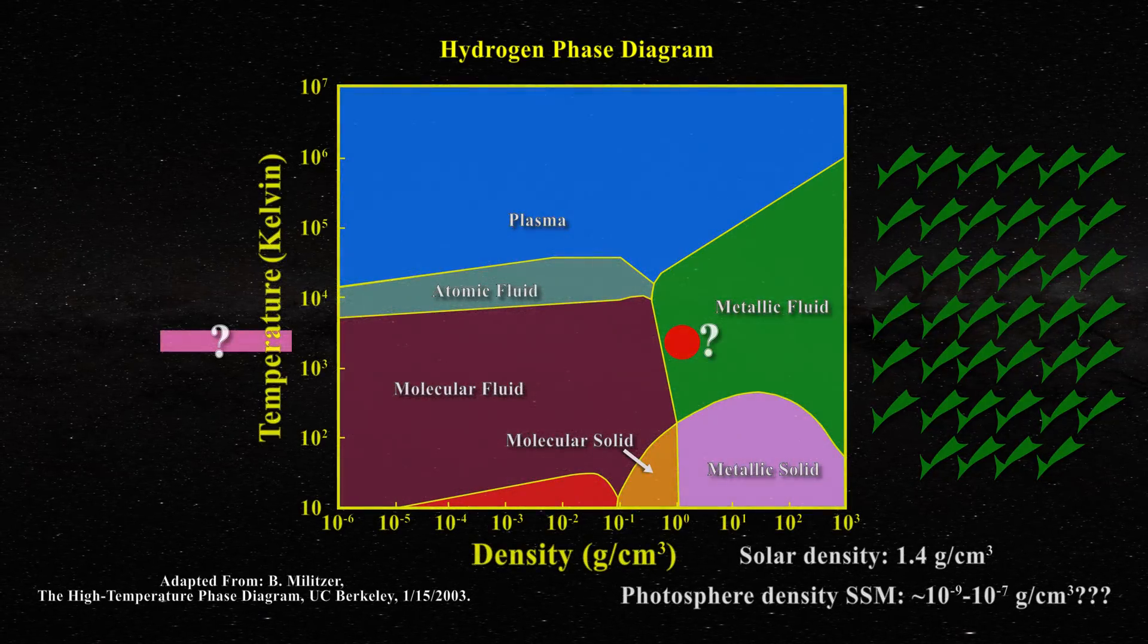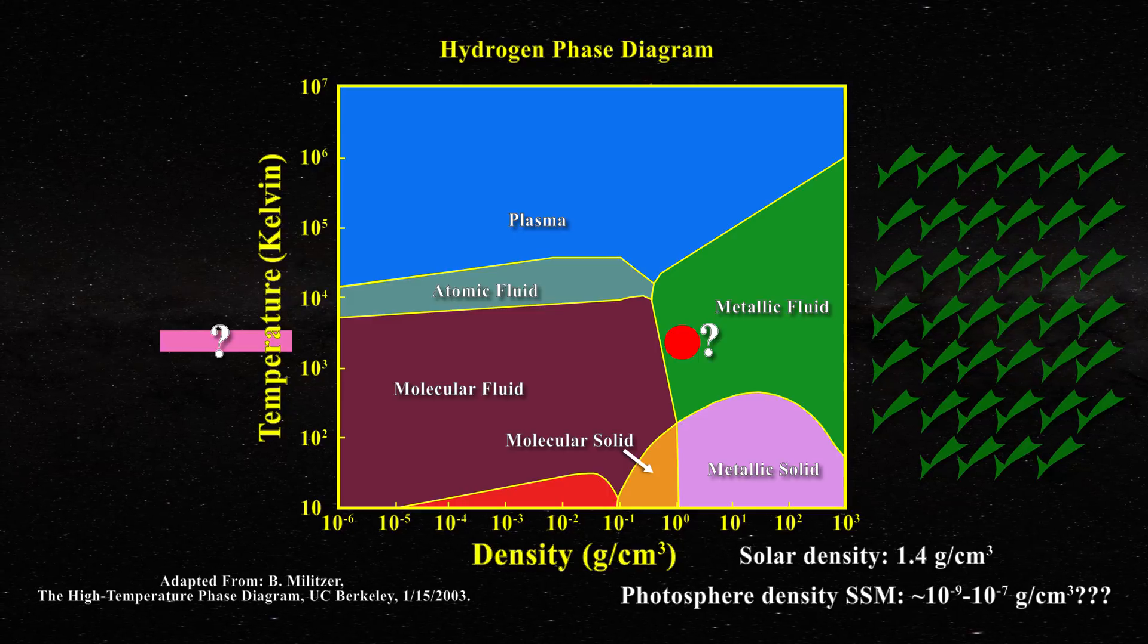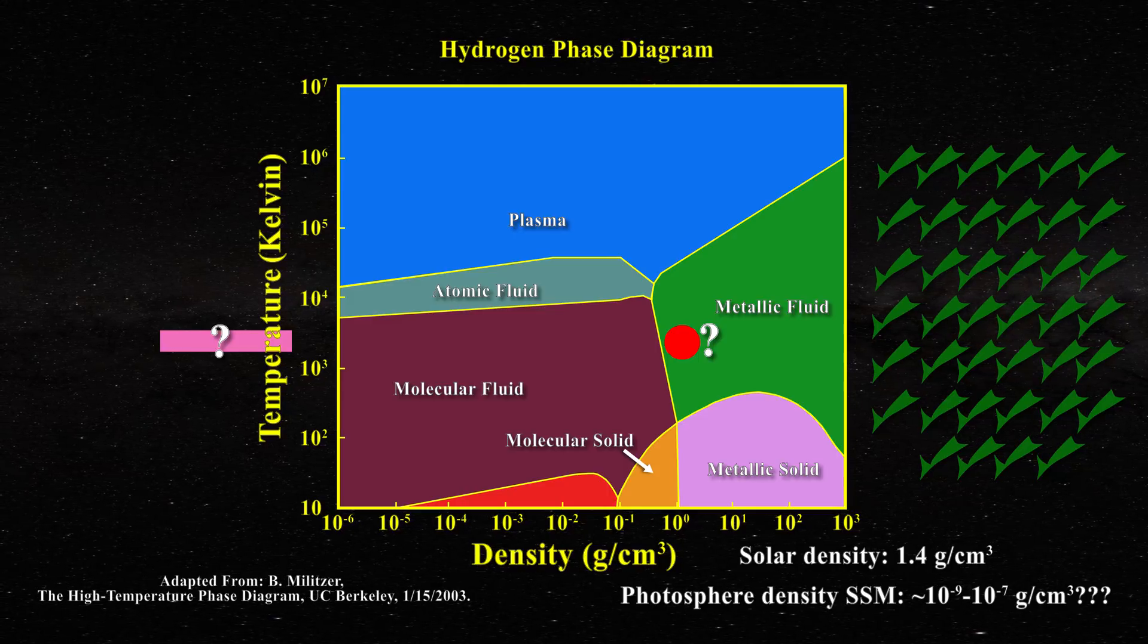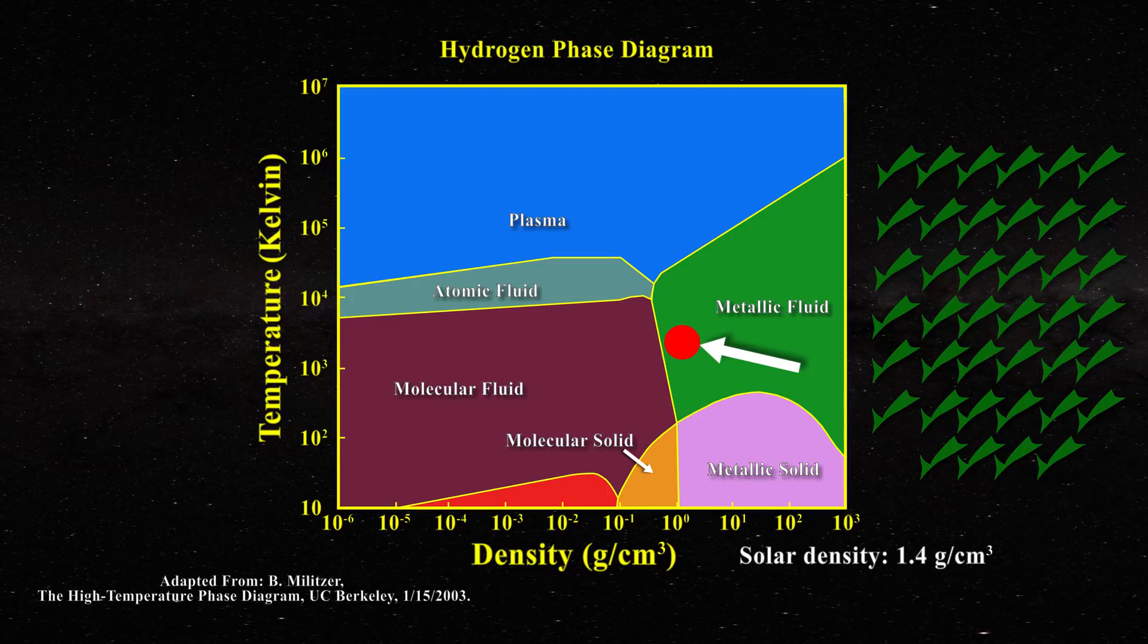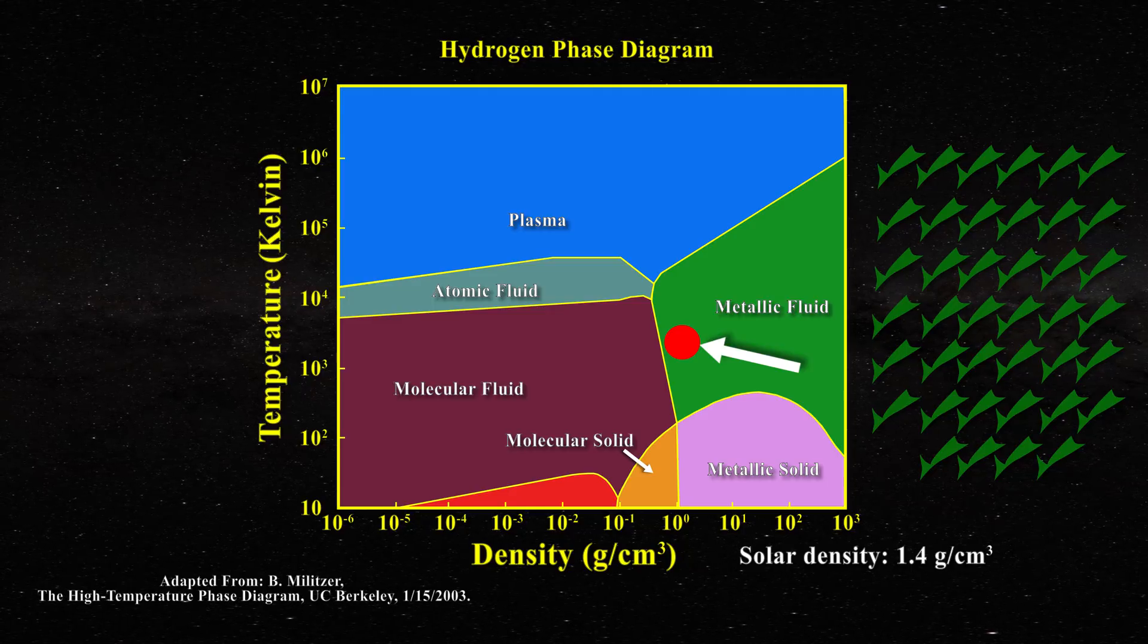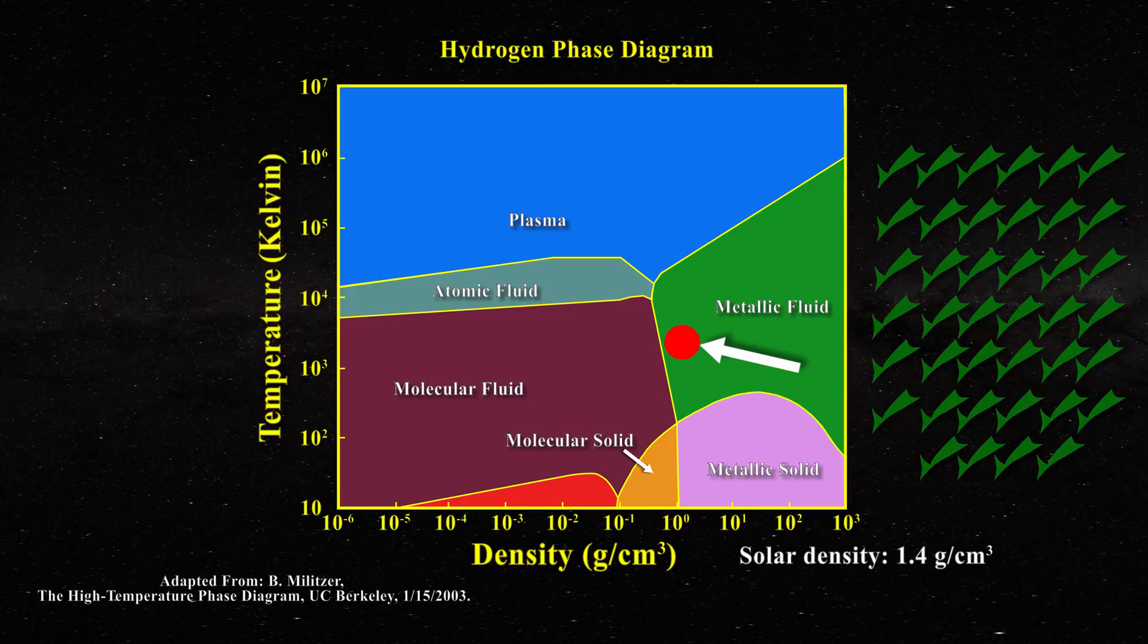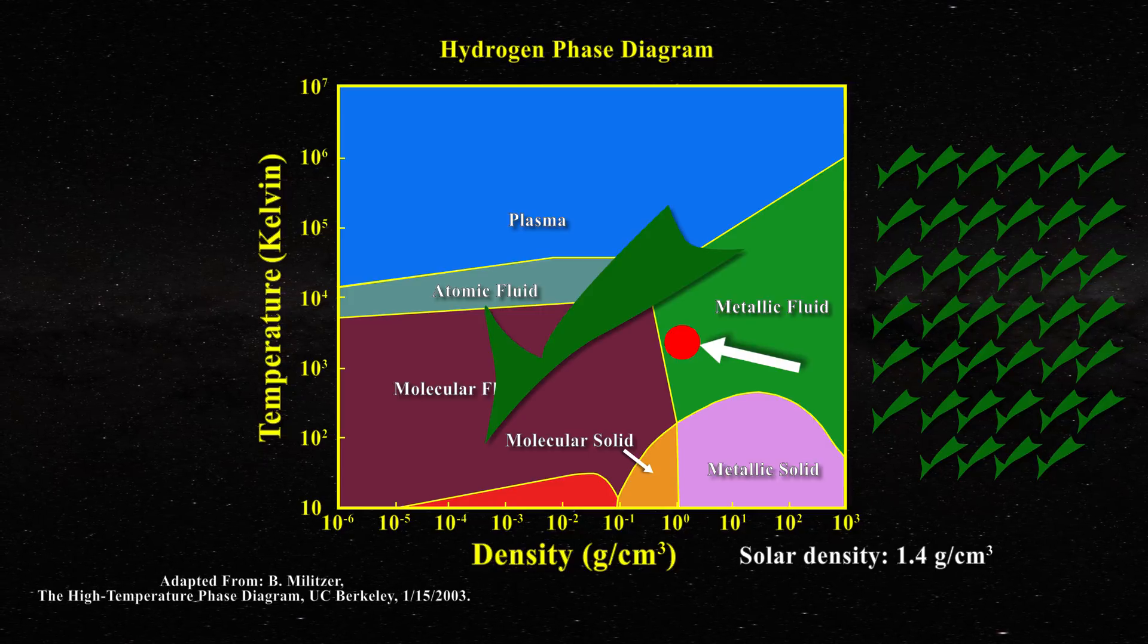So getting back to our diagram, it is clear that the proper region of interest for the solar body is at a density near one gram per centimeter cubed. That is the position for semi-metallic and metallic hydrogen. The sun is not a gaseous plasma. All the evidence points to metallic hydrogen for the sun's composition, including the phase diagram of hydrogen itself.